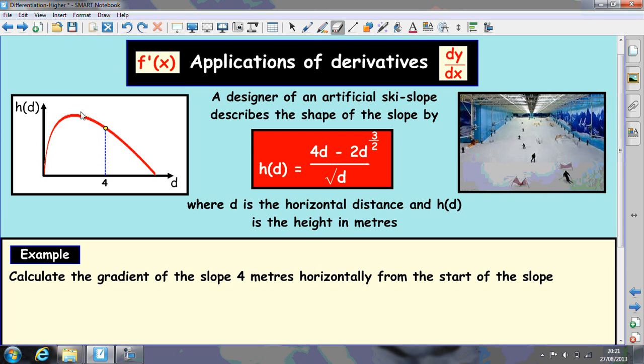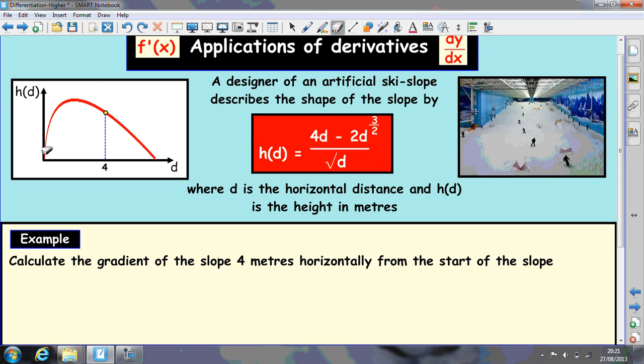In the final example here, we're actually going to look at a real life example. This is a ski slope and we're asked to calculate the gradient of the slope 4 meters horizontally from the start of the slope. This requires us to differentiate this and then substitute 4 in to work out the gradient.